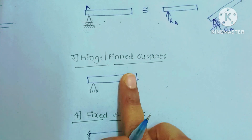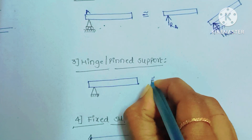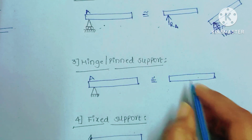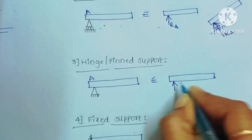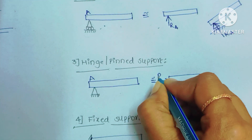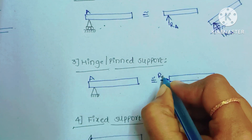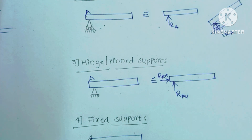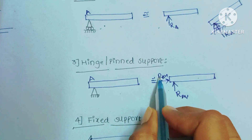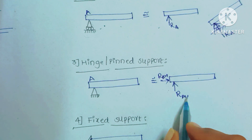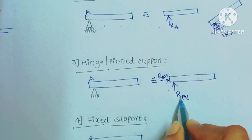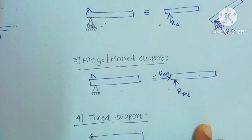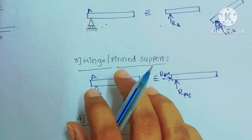The next type is hinged support. Hinged support resists both horizontal and vertical forces, so it has both horizontal and vertical reaction forces. If you take this point as A, the reaction force at A has both vertical and horizontal components. RAH means the reaction force at point A in the horizontal direction, and RAV means the reaction force at point A in the vertical direction. For hinged or pinned support, there are two reaction forces. An example for hinged or pinned support is our doors.